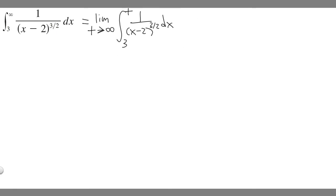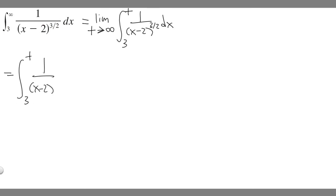So this is our new integral — we've just rewritten it as a limit. Now what we're going to do is solve the integral first. So let's go ahead and solve the integral from 3 to t of 1 over x minus 2 to the 3/2. This is just like a normal integral, and to do this, you're going to use u-substitution.